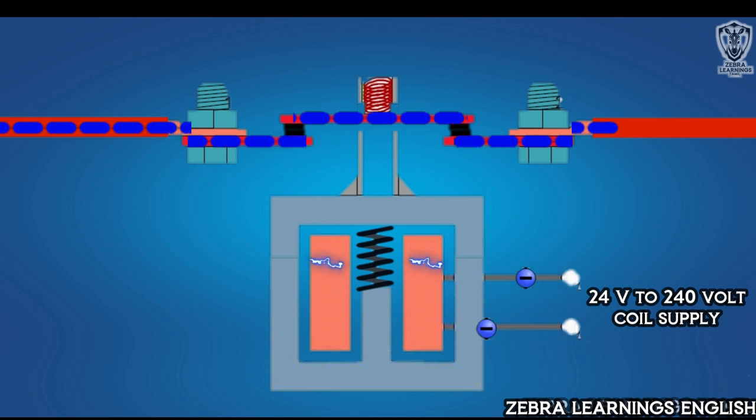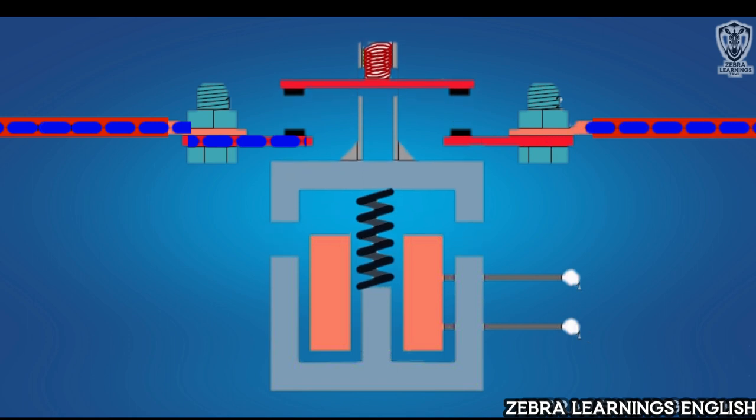When it is de-energized, the electromagnetic field will be cut and the terminal will come to the original position through spring force and the power supply will be cut.